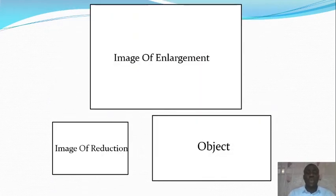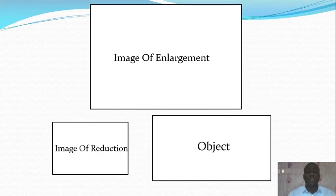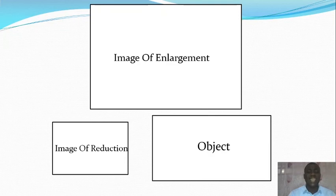Looking at this shape will enable you to understand what enlargement and reduction mean. If you look at the rectangle labeled 'object,' you see it is a certain size. Then if you look at the rectangle labeled 'image of enlargement,' you find out that this image is bigger than the object — this is what we call enlargement. Then if you look at the other one labeled 'image of reduction,' it is slightly less than the object — that means it is the image of reduction. With these three examples, you should have a clear picture of enlargement and reduction.